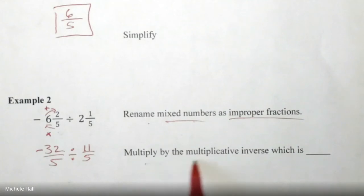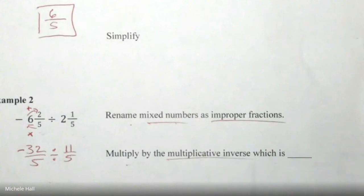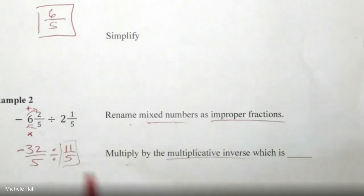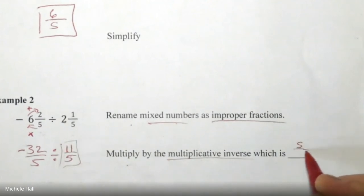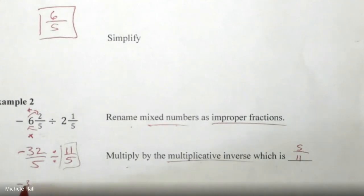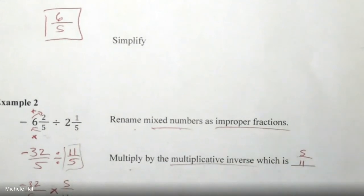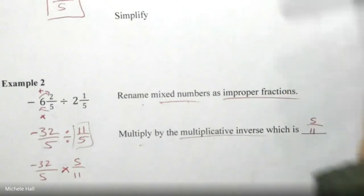Now it says multiply by the multiplicative inverse, which is what? What is the multiplicative inverse here? Five-elevenths. So I am looking at this one and I have to flip it - that's five-elevenths. Multiply by the multiplicative inverse. So we have negative thirty-two fifths, when I flip it it changes to multiplying, and then we're back to multiplying fractions again.